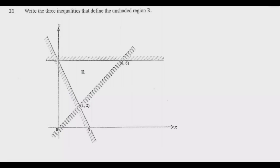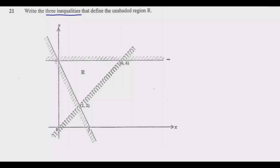Once you know that, the rest becomes straightforward — it's just a matter of substituting. The question asks us to find the three inequalities that define this unshaded area. Start with the easiest: look for a horizontal or vertical line. There is a horizontal line here, and it is a solid line passing through six, so the point is (0, 6). Along this line, y equals six — the value of y is not changing.